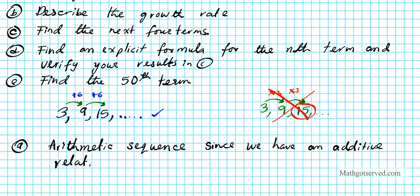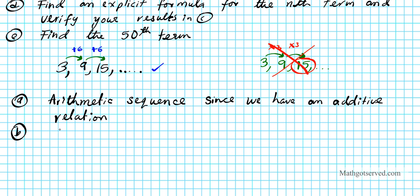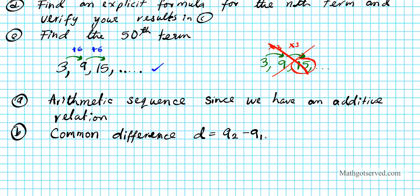For part B, we describe the growth rate. Since it's arithmetic, we look for the common difference D, which equals A2 minus A1. So 9 minus 3 equals 6. The growth rate is: you add 6 every time to generate the subsequent terms of this arithmetic sequence.